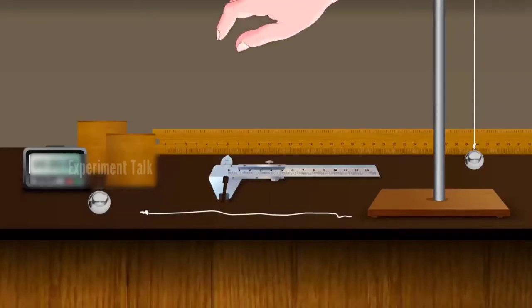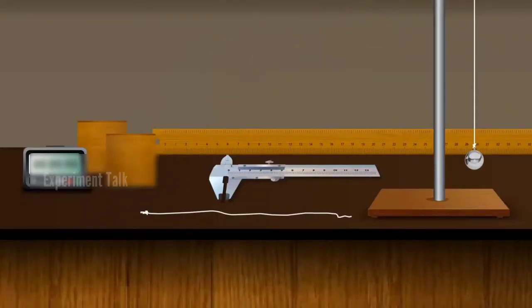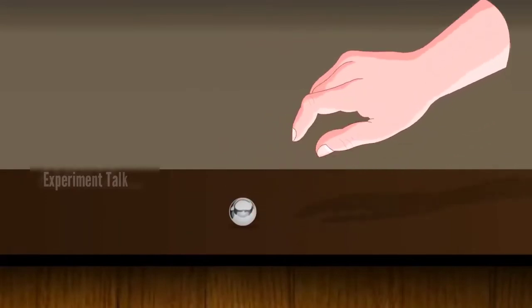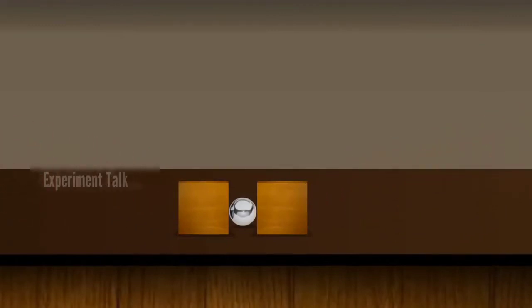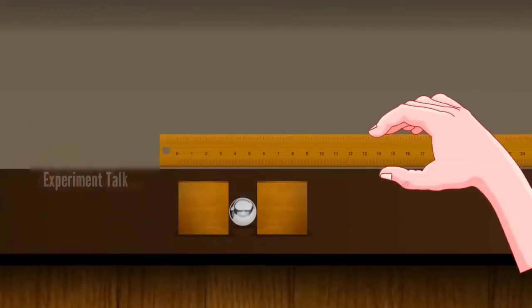Let's measure the diameter of the bob. There are two methods to find the diameter. Place the bob between two wooden blocks, then use the scale and measure its diameter.